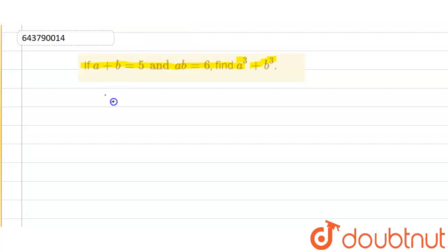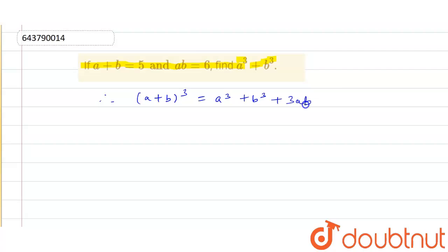We know the identity that a plus b whole cube is equals to a cube plus b cube plus 3ab and in the bracket a plus b. So we know the value of a plus b, we know the value of ab, and we also know the value of a plus b.